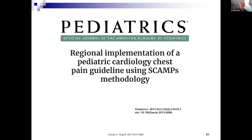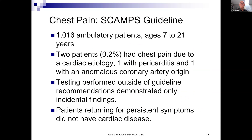Another study using the SCAMPS methodology prospectively looked at children with chest pain presenting for pediatric consultation — over 1,000 patients — and only 2.2% had chest pain due to cardiology. One pericarditis and the other anomalous coronary origin, like scenario 3. Testing performed outside of the guideline recommendations demonstrated only incidental findings, and patients returning for persistent symptoms didn't have heart disease. The guideline was successful in really narrowing it down.